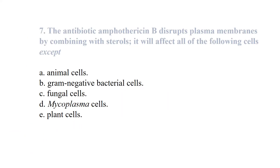The antibiotic amphotericin B disrupts the plasma membrane by combining with sterols. It will affect all of the following cells except: gram-negative bacterial cells. This is because gram-negative cells do not contain sterols.